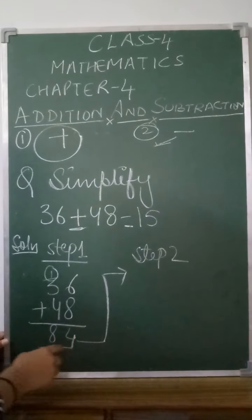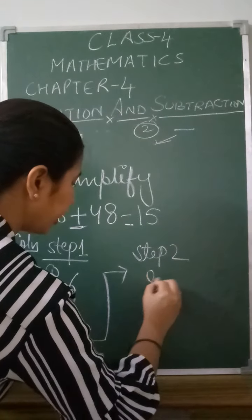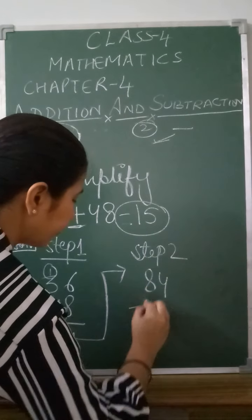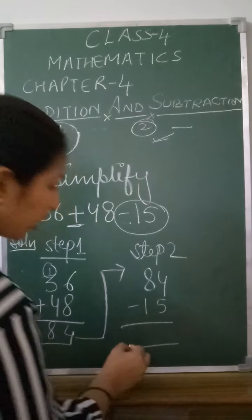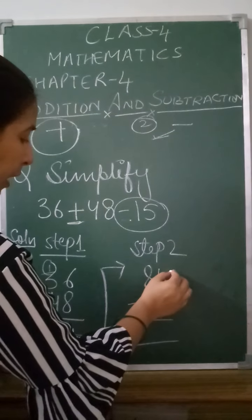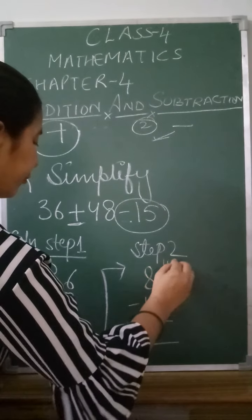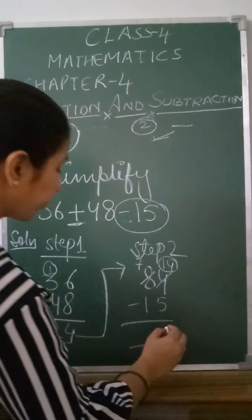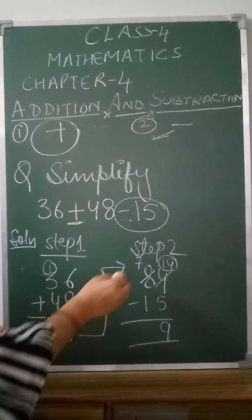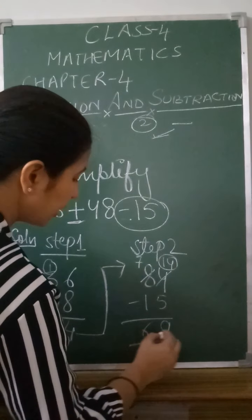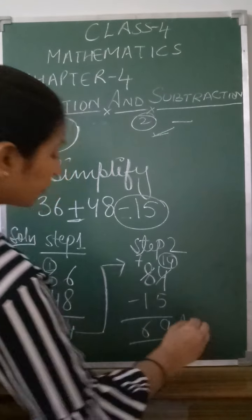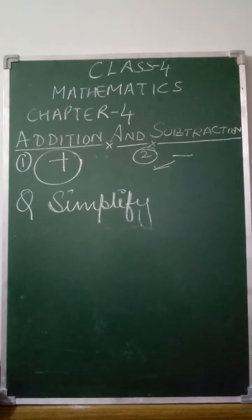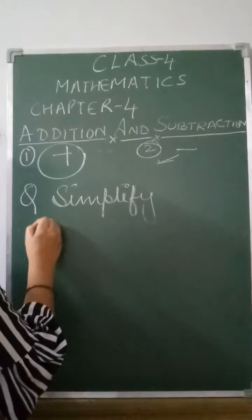Now take this answer to Step 2. We have 84, and now we subtract 15. We already know how to subtract: 14 minus 5 is 9, and 7 minus 1 is 6, so the answer is 69. This is how you do two operations together.